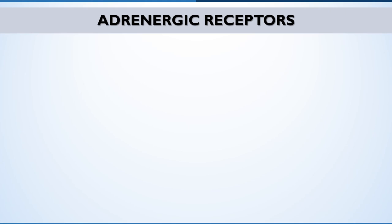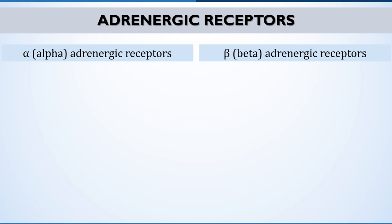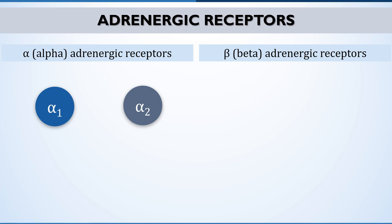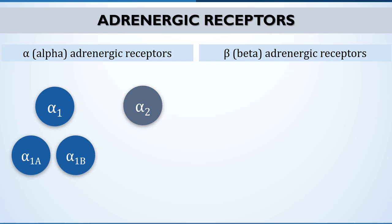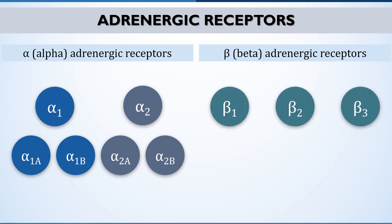Berger and Dale in 1910, and later Ahlquist in 1948, emphasized the qualitative responses of sympathomimetics and stated that adrenoceptors are of two types: alpha and beta. These receptors are again subdivided. There are two distinct types of alpha receptors: alpha-1 and alpha-2, with subtypes alpha-1a, alpha-1b, alpha-2a and alpha-2b. Beta receptors are subdivided into beta-1, beta-2 and beta-3.